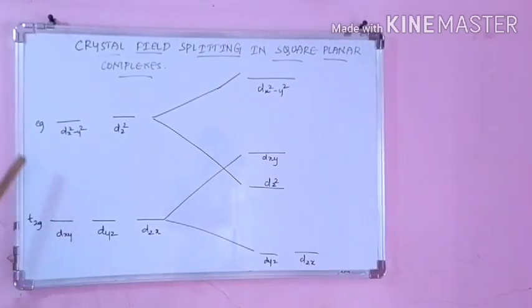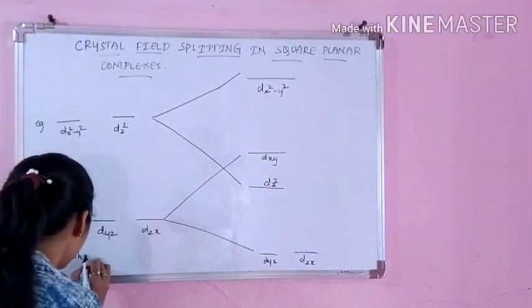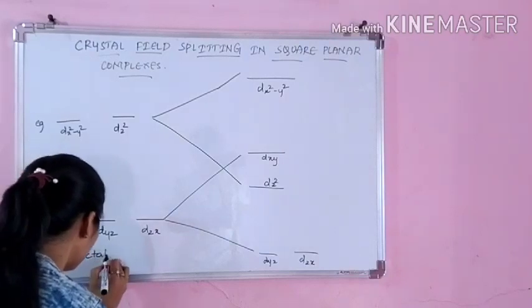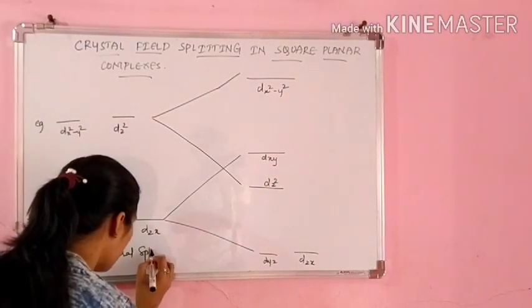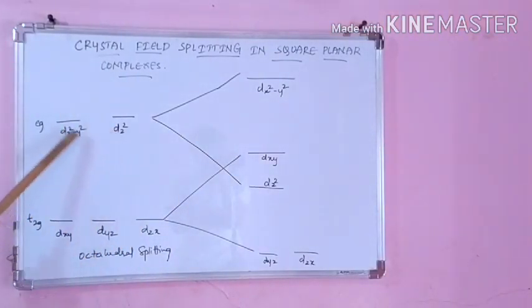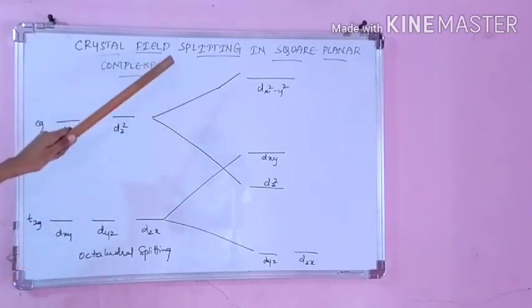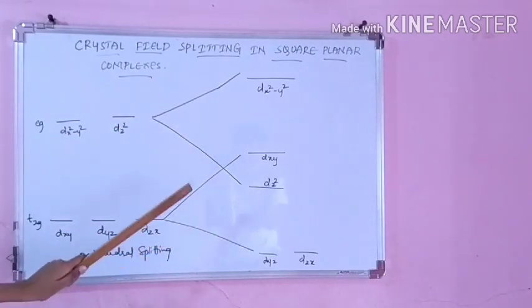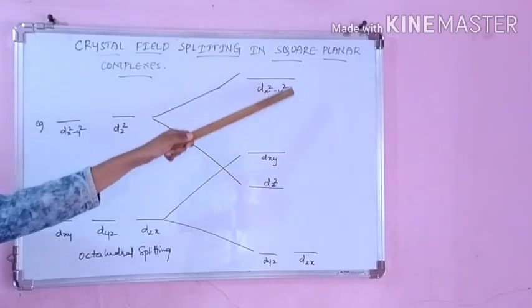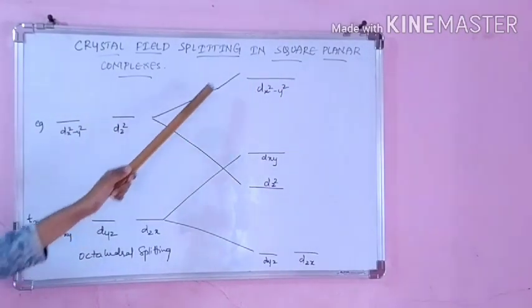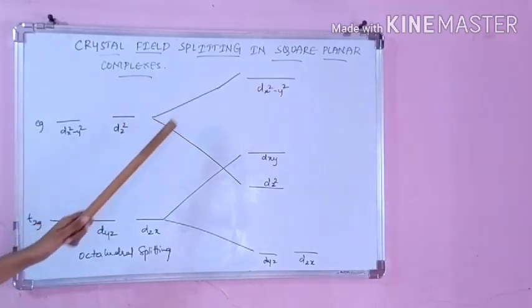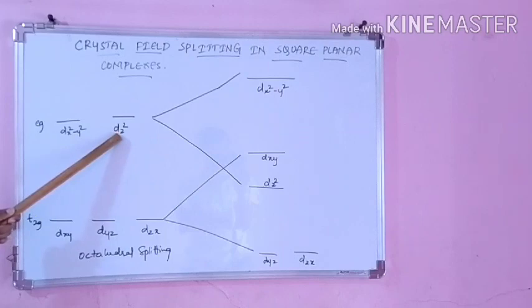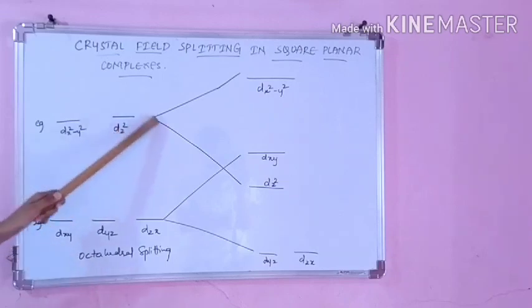Here you can see a diagram. On the left-hand side is the octahedral splitting, which we learned last class. In octahedral splitting, three orbitals occupy the lower energy level and two orbitals occupy the higher energy level. Now we compare it with square planar splitting. You just learned that dx²−y² will have maximum repulsion and hence will occupy a higher energy level — even higher than in octahedral, so it goes upward. And how about dz²? Since your ligands are only in the xy plane, there is no effect on dz², hence no repulsion, and its energy will decrease — it takes a lower position.